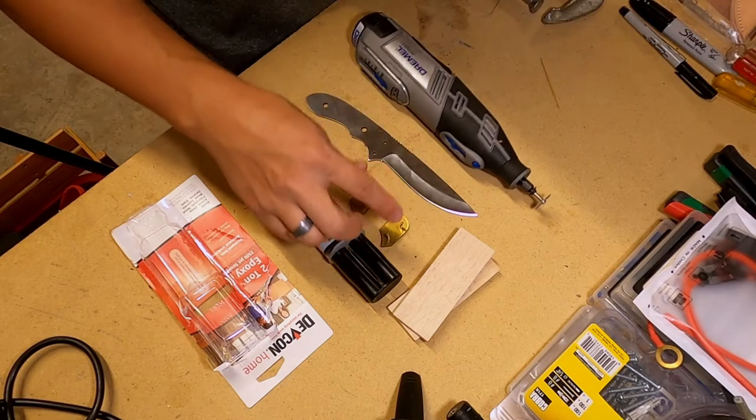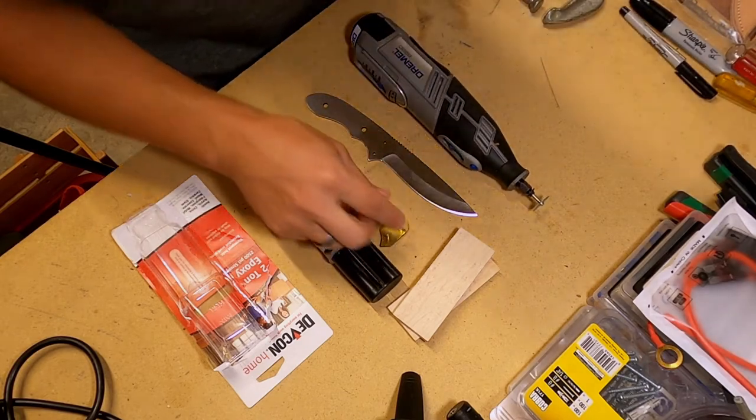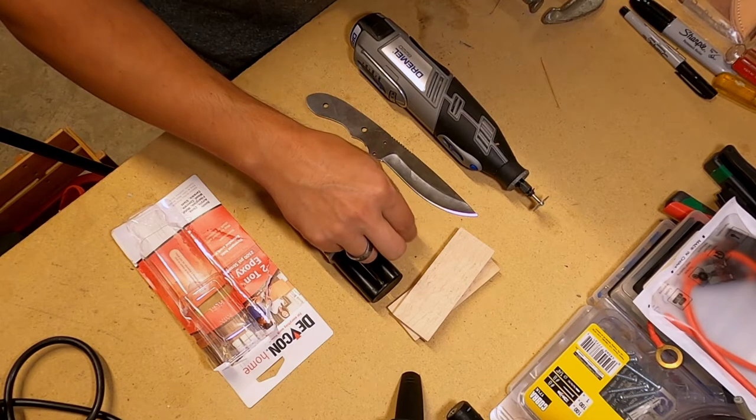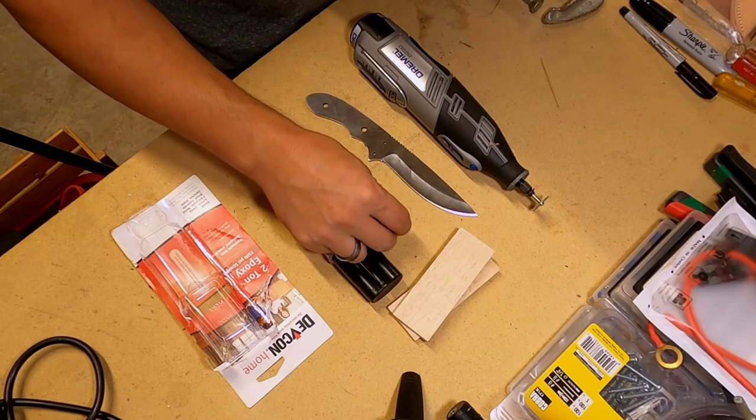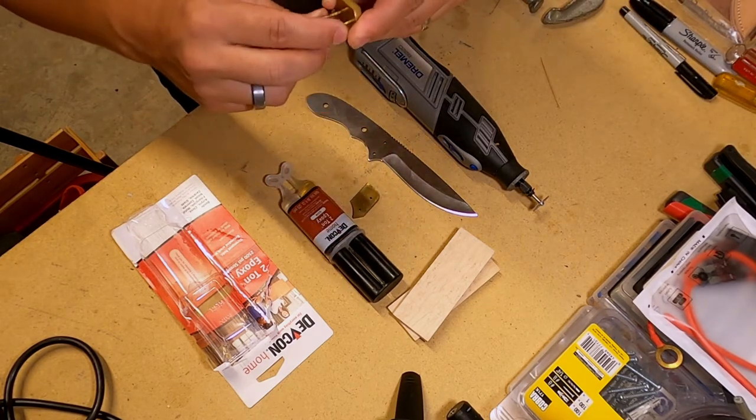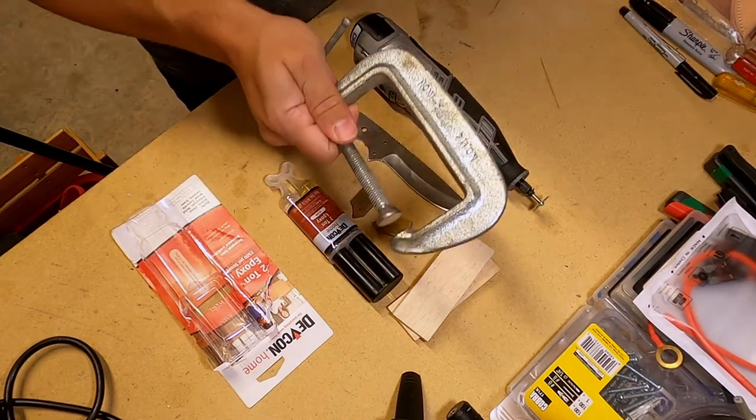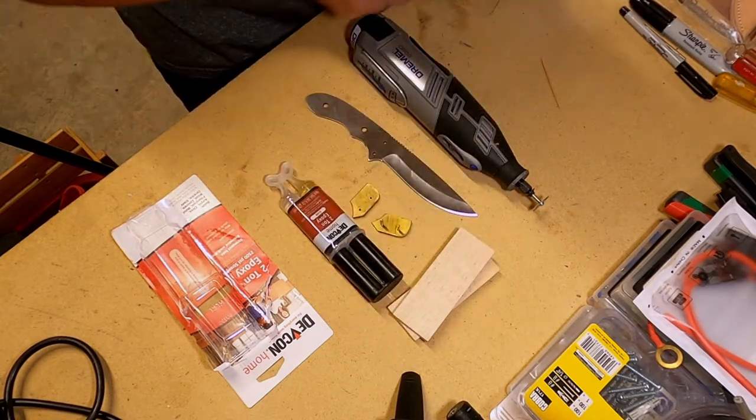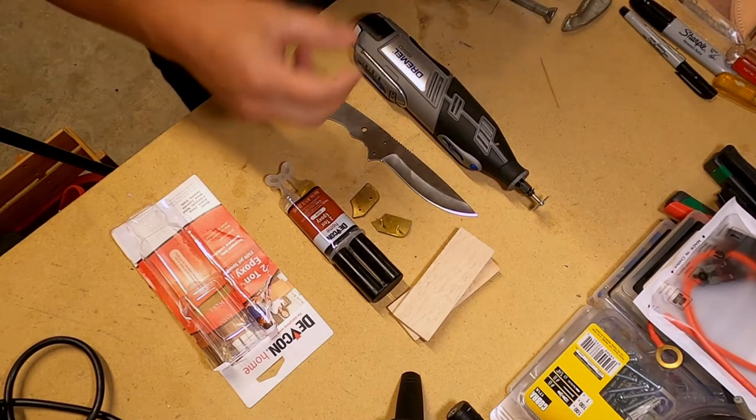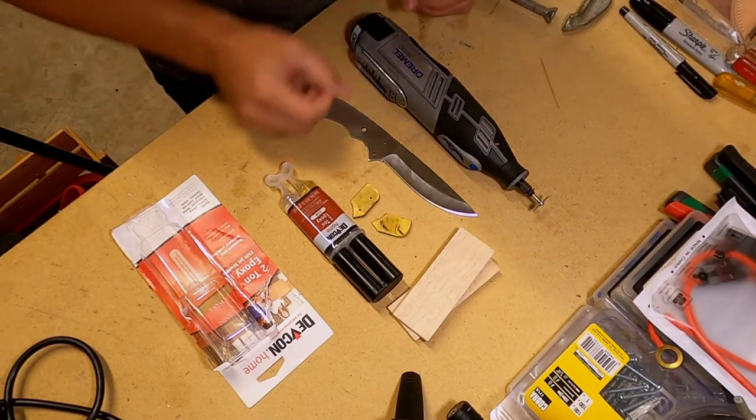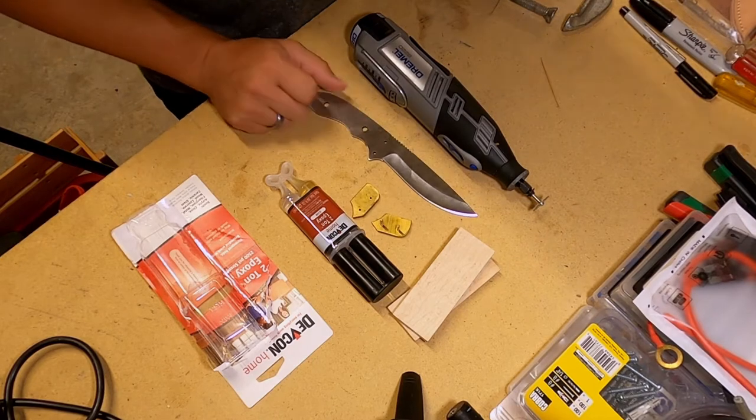Once we've got the bolsters epoxied, we're going to Dremel off the excess pins that hold the bolsters in place, and we're going to clamp it with a C-clamp to make sure that epoxy cures and the bolsters are firmly attached to the knife.